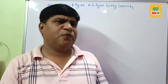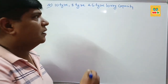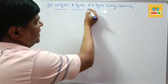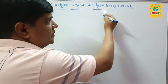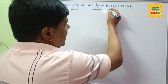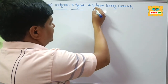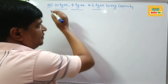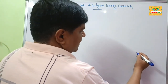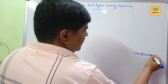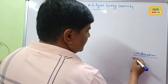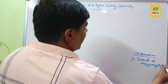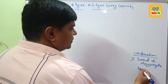Hi guys. Today in this topic we know about the amount of sand and aggregate that can be hauled by 10-tire, 8-tire and 6-tire trucks. A truck is also called a lorry. At the construction site, different materials like sand and aggregate can be hauled by using different sizes of trucks.